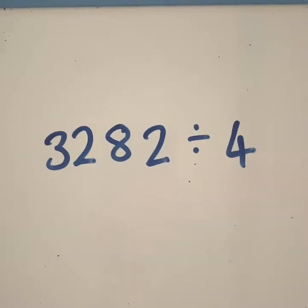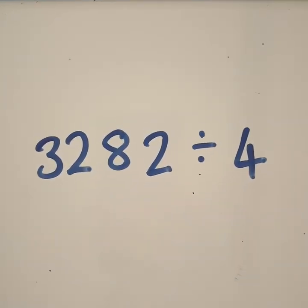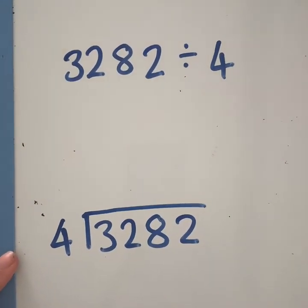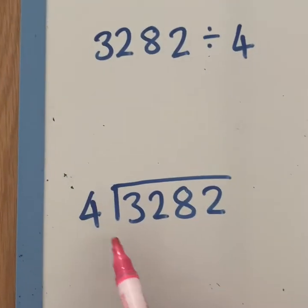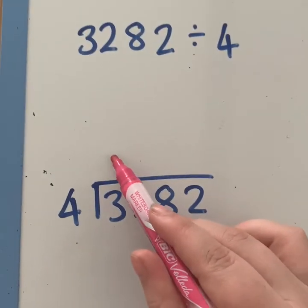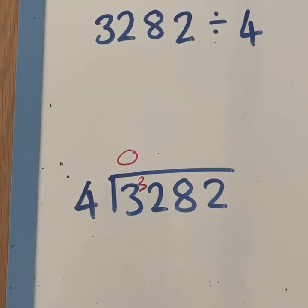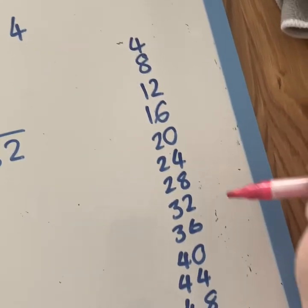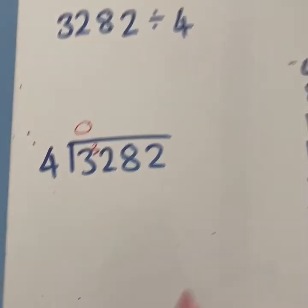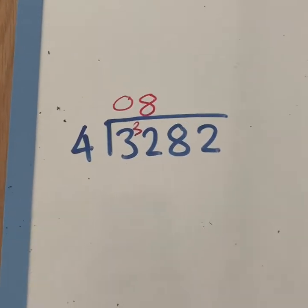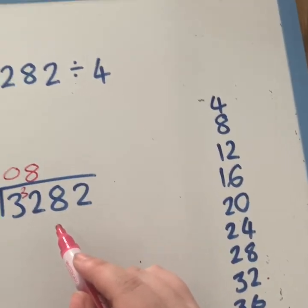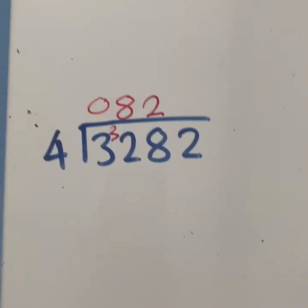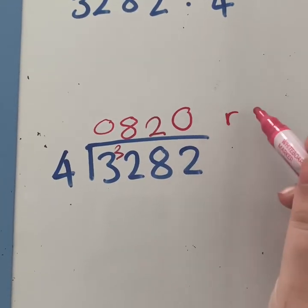Okay, so for our next example, we're going to do 3,282 divided by 4. And I've already put that into our bus stop. So remembering that our smaller number goes on the outside. And now we can get started. So how many 4s go into 3? Which is 0. And we're going to carry that over. So how many 4s go into now 32? Well, I've wrote out my 4 times table ready and 32 is on there exactly. So it's 4 times 8. How many 4s go into 8? Well, that's an easy one. 2. And now how many 4s go into 2? Well, we can't do that. So we've got 0, remains 2.